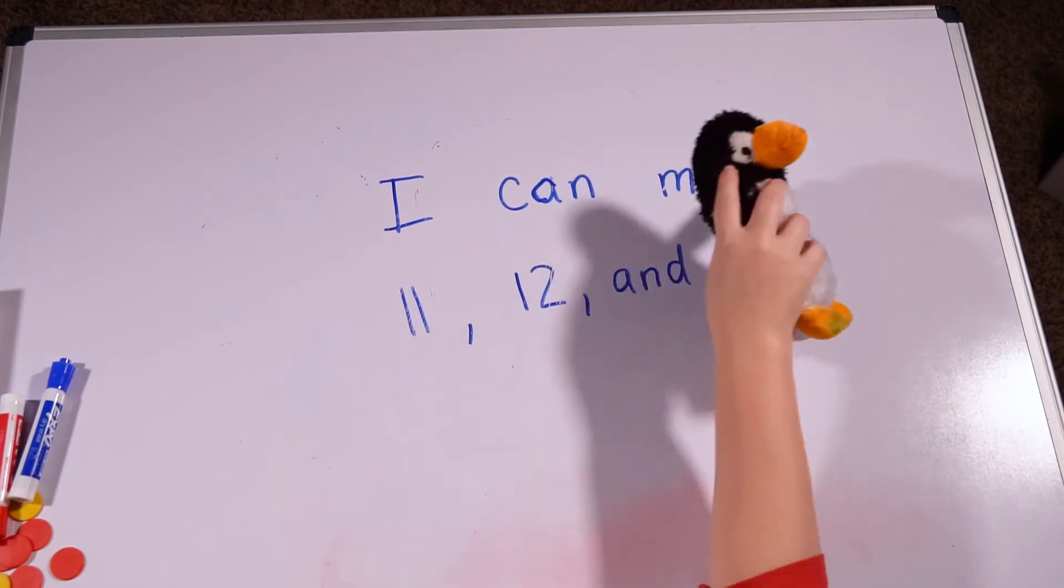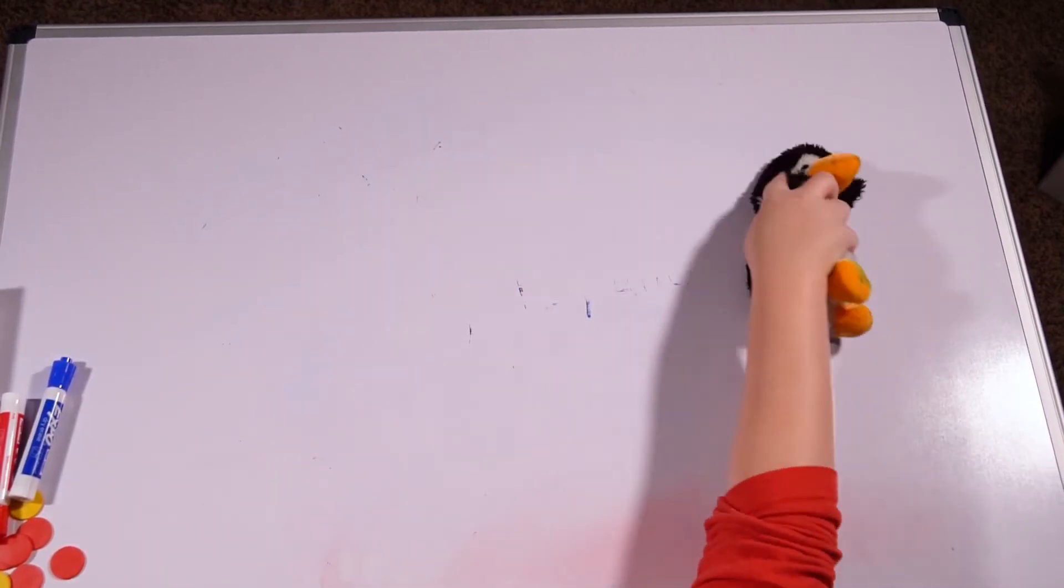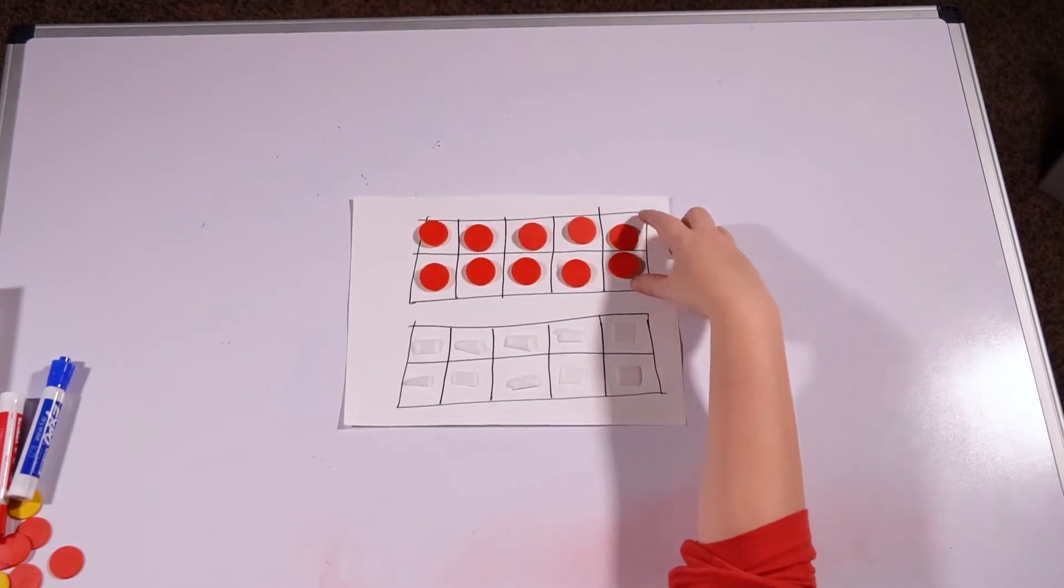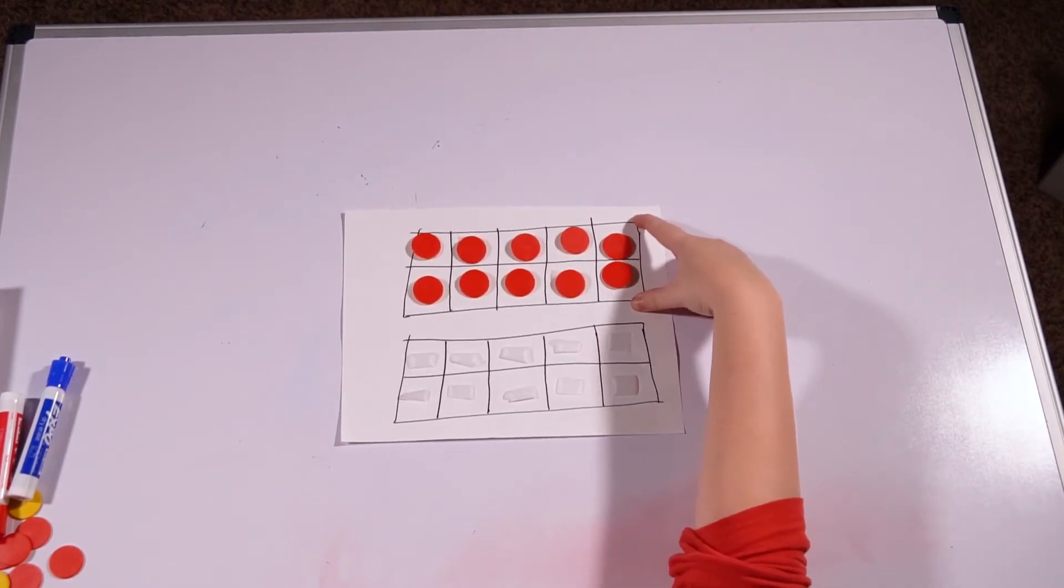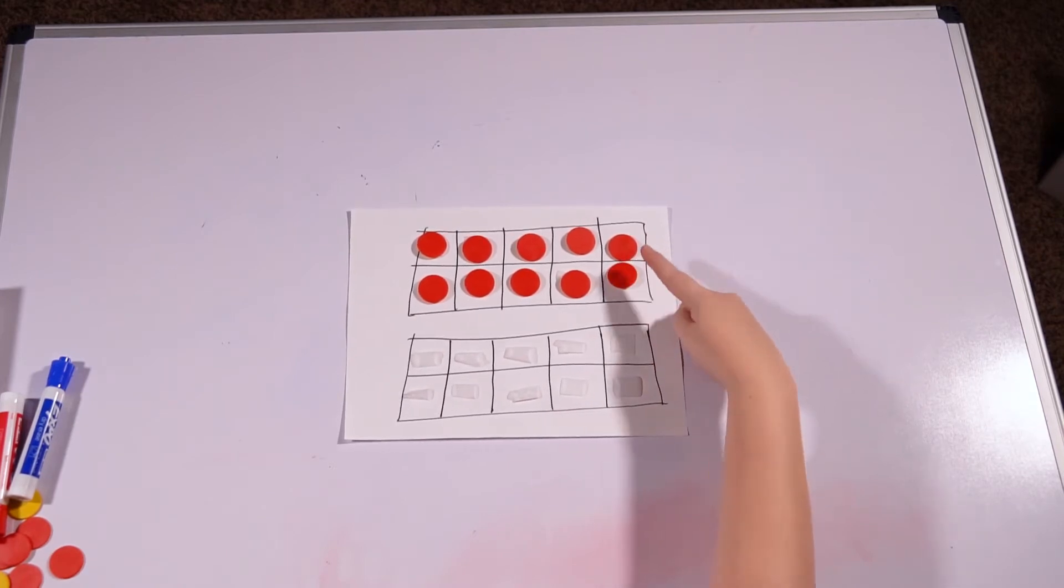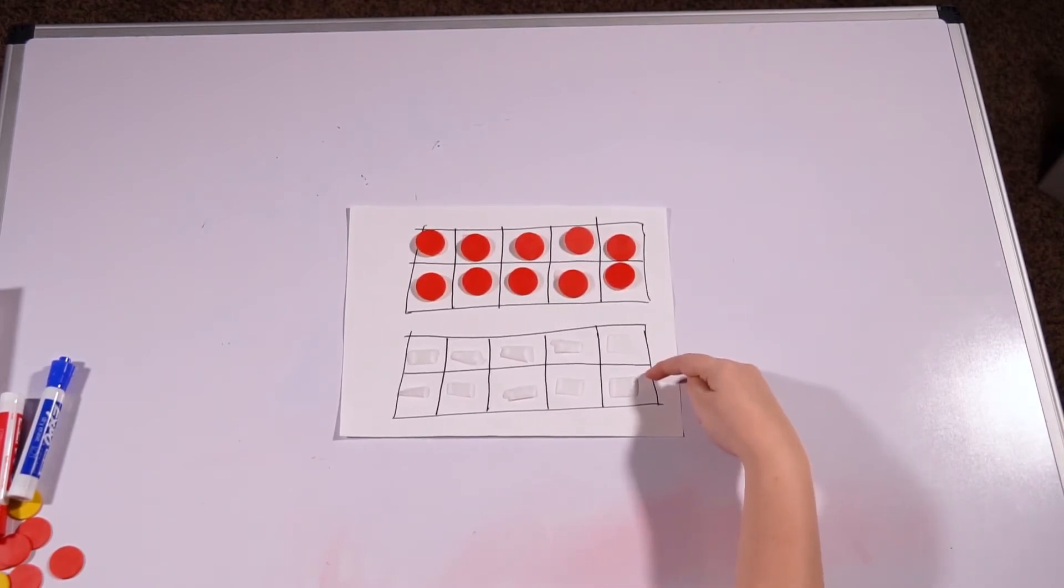Let's get started on that. We are going to be using a double 10 frame. Now, the only thing that's different about a double 10 frame is instead of just having one 10 frame, you have two. Just like our Reck and Rex with the top and bottom, we have two 10 frames.